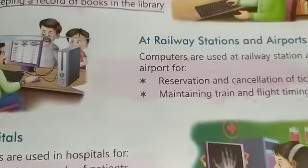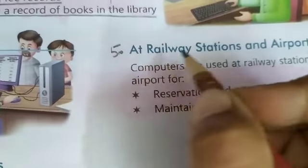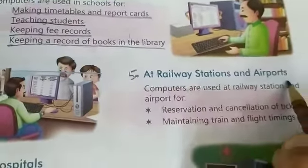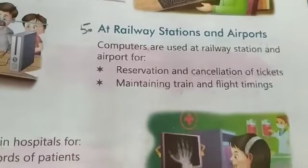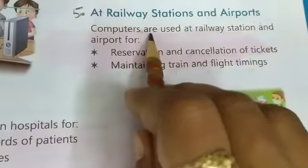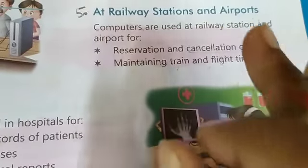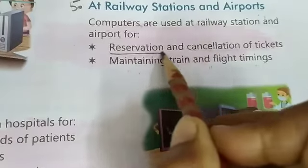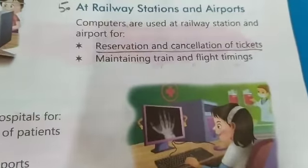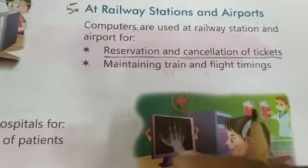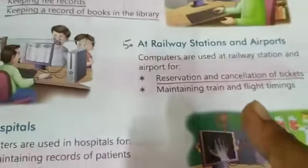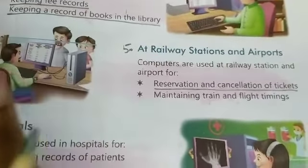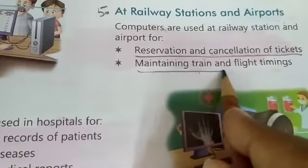Ab aaj hum kya karenge? Next point se start karenge. Hamara fifth point hai — at railway station and airport. Matlab railway station aur airport pe computer ka kya use hai? Toh thoda idea toh lag gaya hoga. Phir bhi chaliye padhte dekhte hain. Computers are used at railway station and airport for — first hai reservation and cancellation of tickets. Tickets ka reservation karne ke liye aur cancel karne ke liye bhi computer ka hi use kiya jata hai. Second hai maintaining train and flight time.